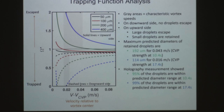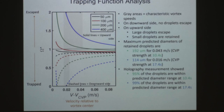For droplets on the downward side, all values of omega are less than one, meaning all droplets regardless of size remain trapped. For droplets on the upward side, a 400-micron droplet always escapes, a 200-micron droplet escapes up to a certain vortex speed, but a 50-micron droplet remains trapped in the vortex. We were able to compare these predicted values against our actual measurements, and they matched really well.